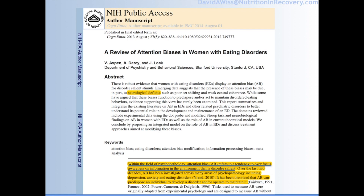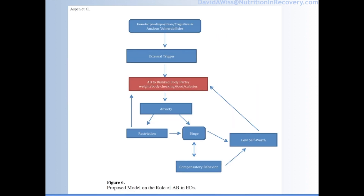So with eating disorders, we're thinking about how attentional bias refers to one's tendency to overly focus on information in the environment that is disorder-salient — things like food, things like body, etc. How do genetics and other history of addiction and anxiety play in? Those are the big research questions now. If someone's more predisposed to attentional bias and you match it with a cue or trigger in the external environment, we're seeing body dissatisfaction, more anxiety, restriction, binge, compensation. The cycle continues.